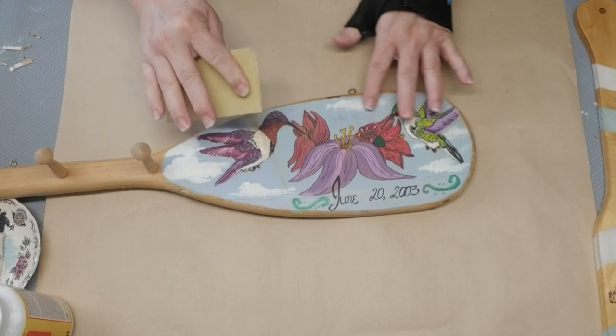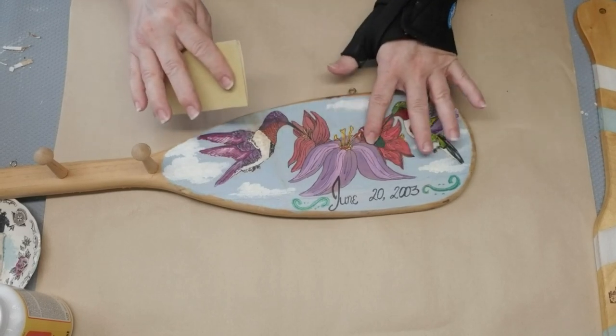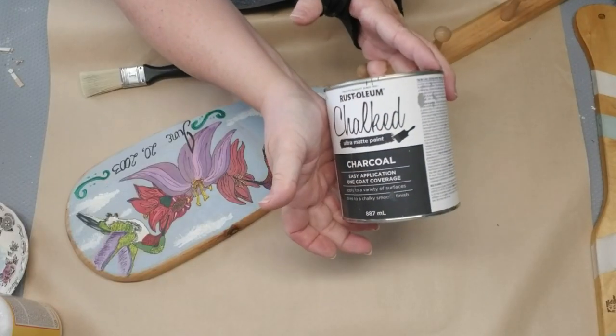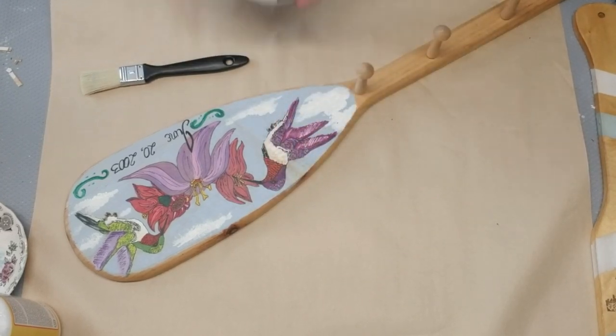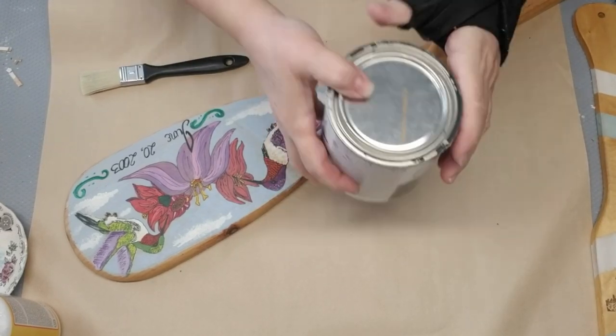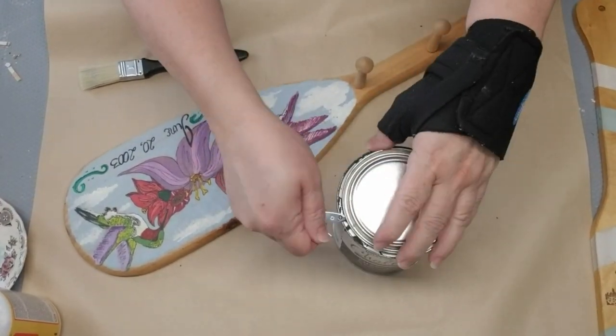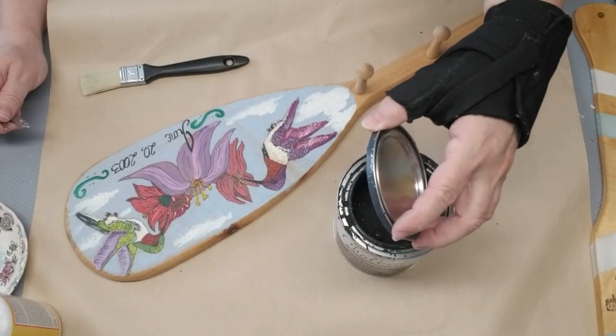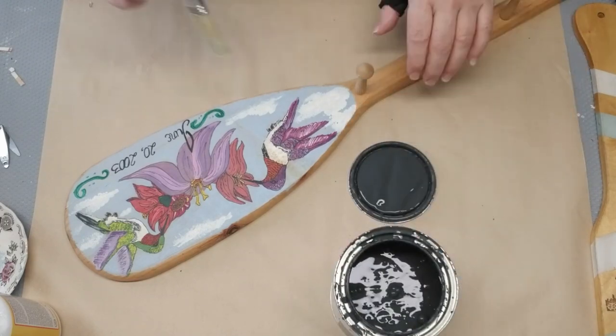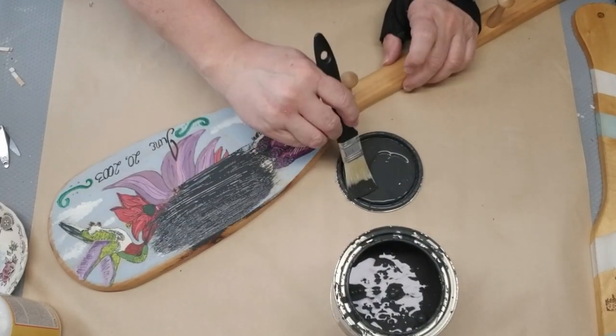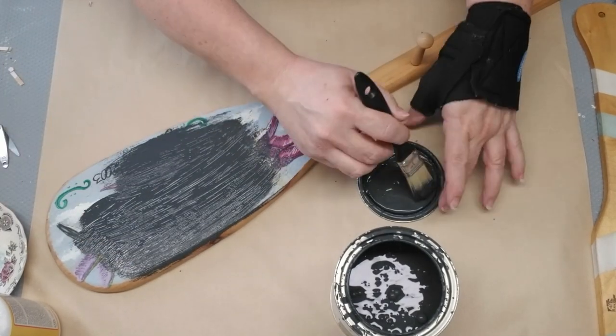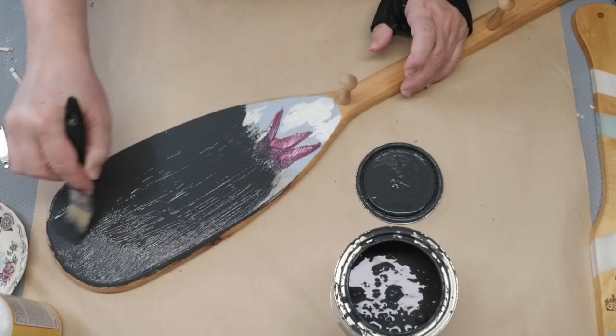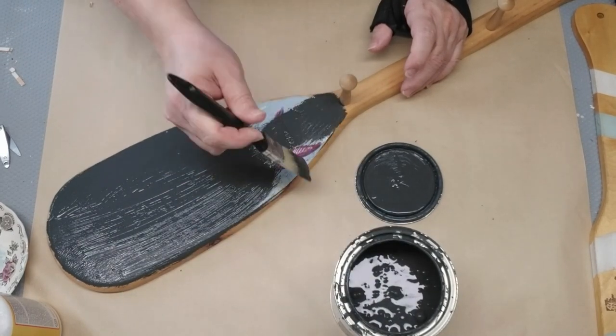I'm going to give it a coat of Rust-Oleum charcoal paint. The paddle will get one coat and then I'll probably do some distressing. I don't have to worry about getting really good coverage, although chalk paint is great for coverage. I'm just using a cheap dollar store brush.